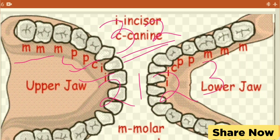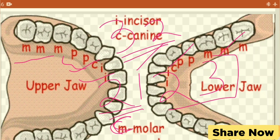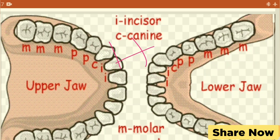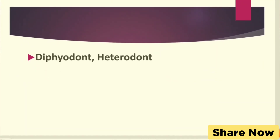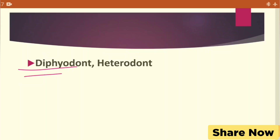The dental formula shows: 2 incisors, 1 canine, 2 pre-molars, and 3 molars. We can see different types of teeth like incisors, canines, pre-molars, and molars.